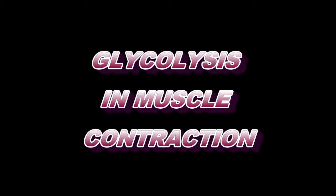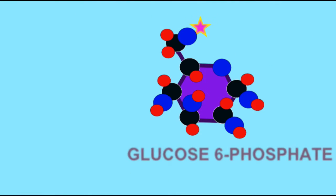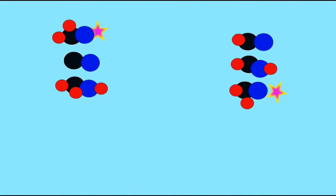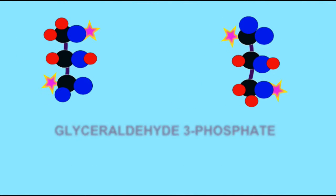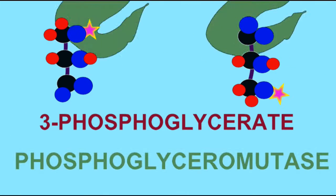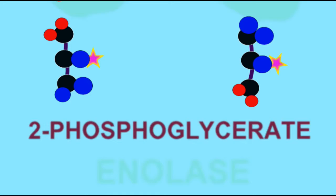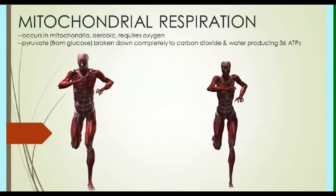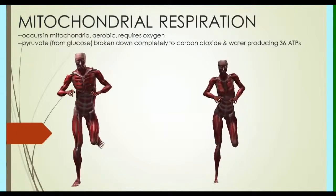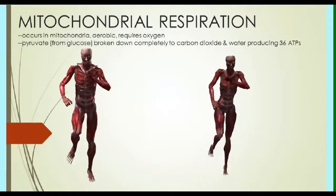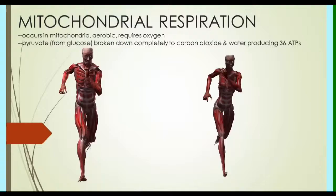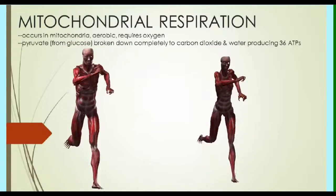Once ATP and creatine phosphate stores are exhausted, muscle cells can generate more ATP by anaerobically splitting glucose molecules through the process known as glycolysis. Oxygen is not needed, and this process can occur anywhere in the cytoplasm of the cell — it doesn't have to occur in mitochondria. This leaves the majority of the energy in sugar molecules unused, but it can supply ATP in a rapid fashion during exercise where energy is needed quickly, such as during a sprint.